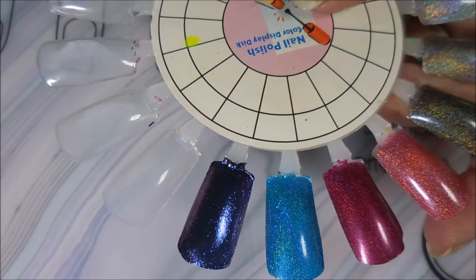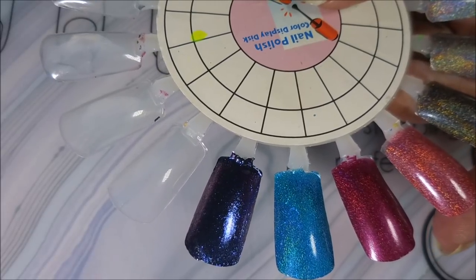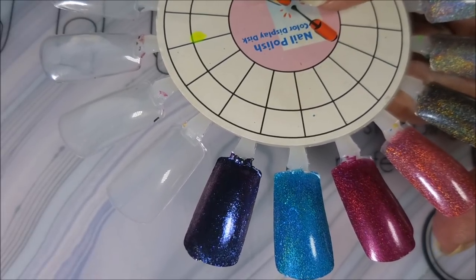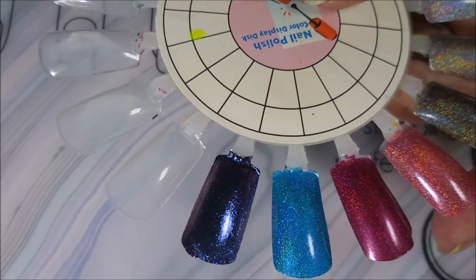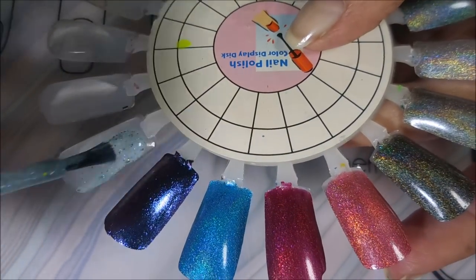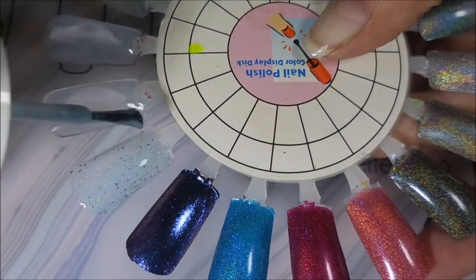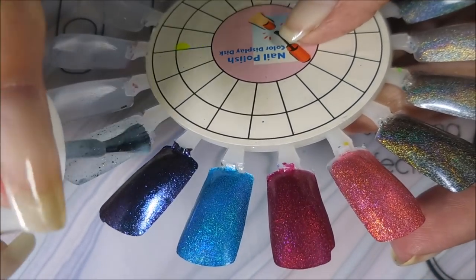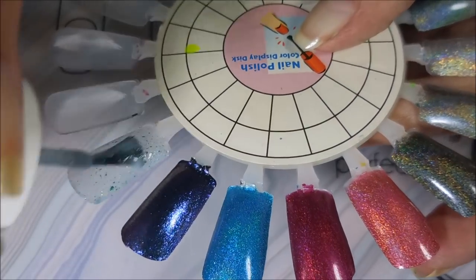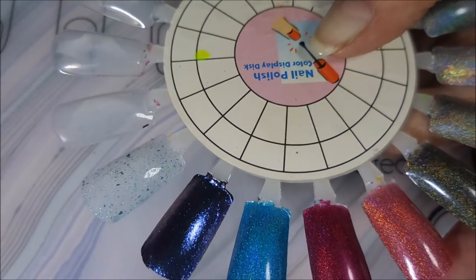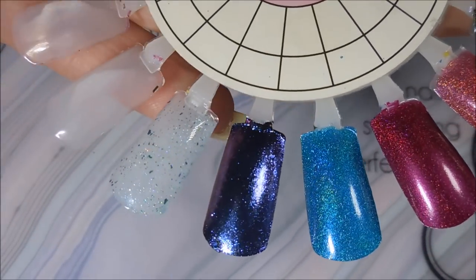All right here we go. We're going to start off with the Glitter Daze polish, The Prophecy. If I can get the brush out of the bottle. It's going on quite sheer. This might be one that I would decide to layer over something else but we will see. We will see how that works.